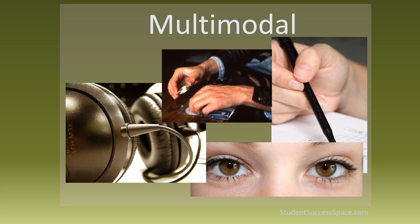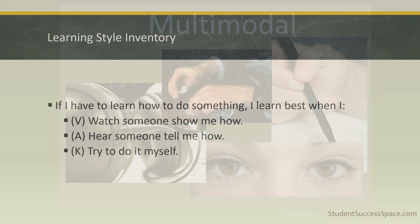For this learning style inventory, be sure to choose the answer which best reflects yourself. Just record on a piece of paper a V for visual, an A for audio, or a K for kinesthetic. First question: if I have to learn how to do something, I learn best when I watch someone show me how, hear someone tell me how, or try to do it myself.